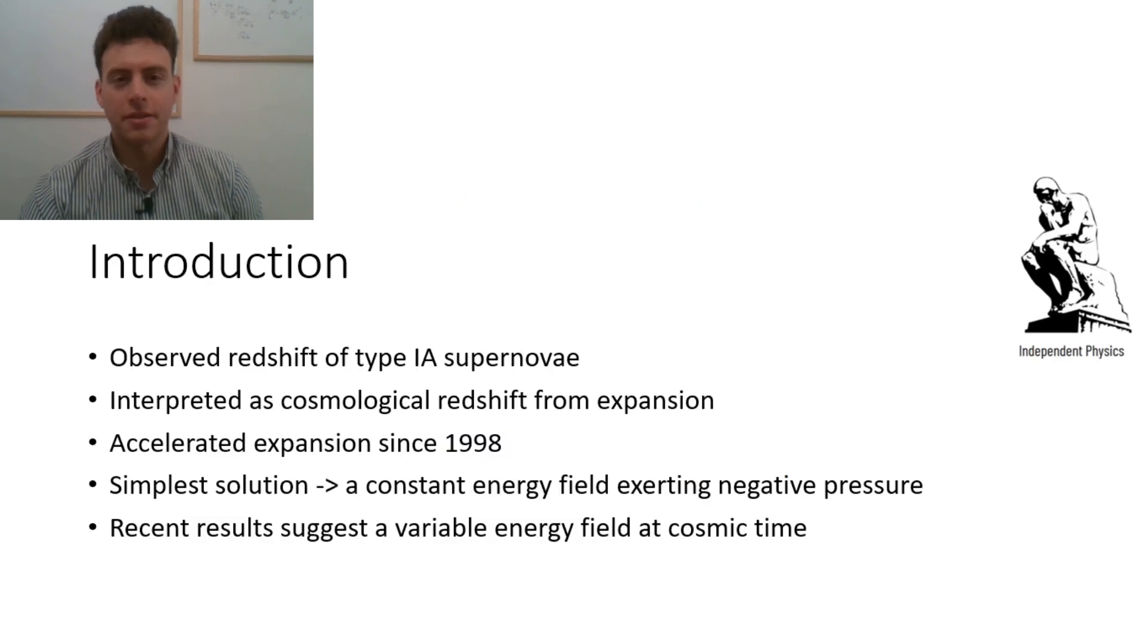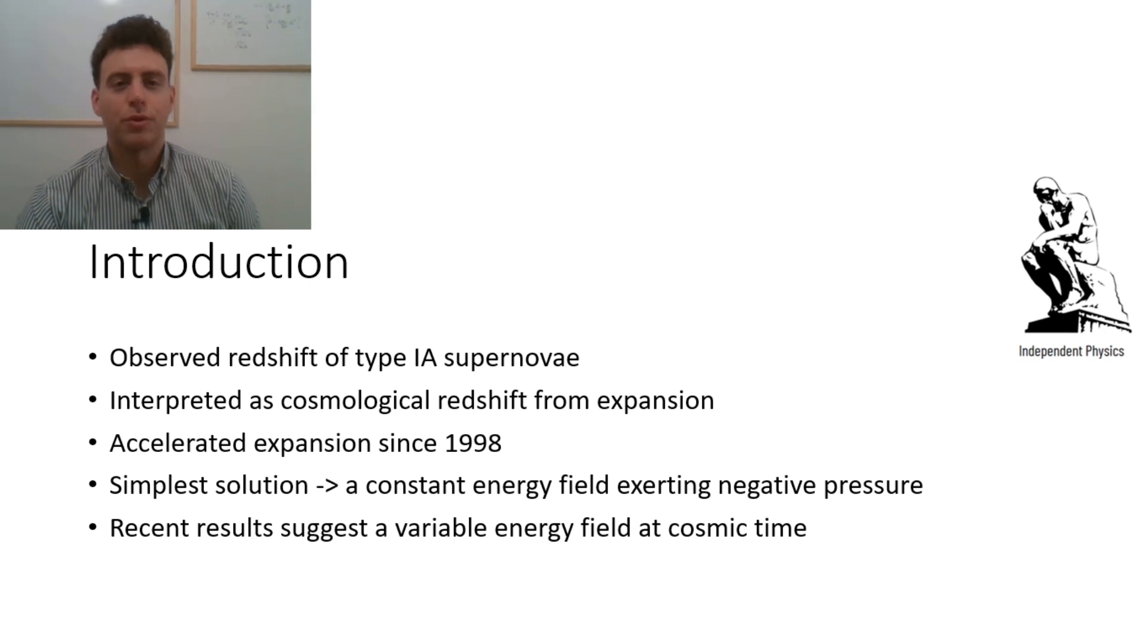The observed redshift of type 1a supernova is interpreted as a cosmological redshift from the expanding universe and thanks to them we know since 1998 that the expansion is accelerating. The simplest solution to explain the accelerated expansion is to hypothesize a constant energy field exerting negative pressure which is referred to as dark energy in the lambda CDM model.